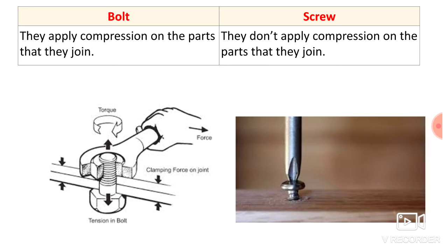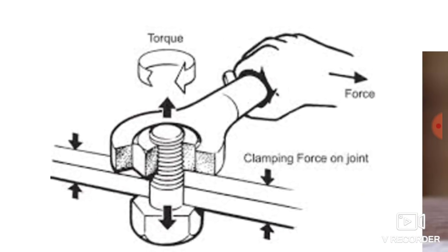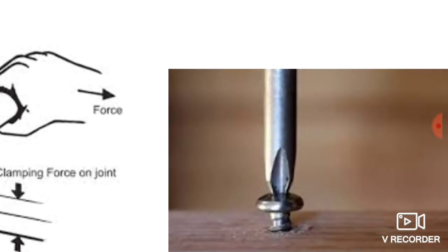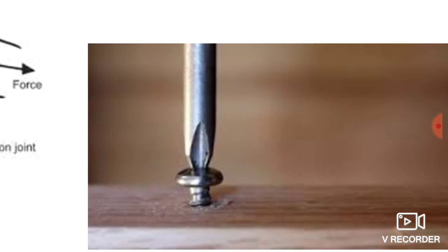Next difference: bolts apply compression on the parts that they join. When clamping with a bolt, torque is applied with a spanner, and this applies compressive stress over the joined parts while the bolt itself is subjected to tensile stress. So whenever an assembly is done with a nut and bolt, that assembly is under compression due to the applied torque, whereas the bolt is under tension. Screws, however, do not apply compression on the parts they join — when assembled with a screwdriver, no compressive force is applied to the part.